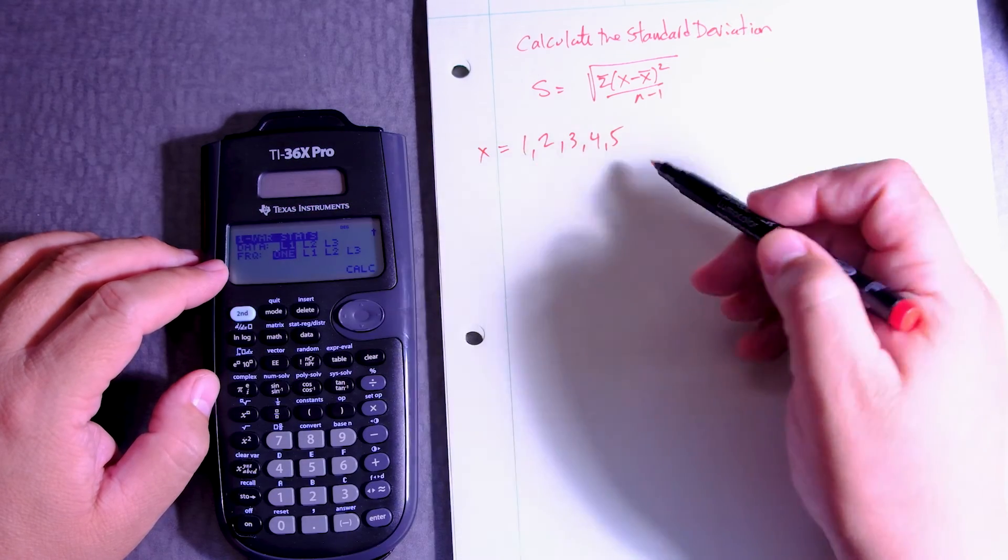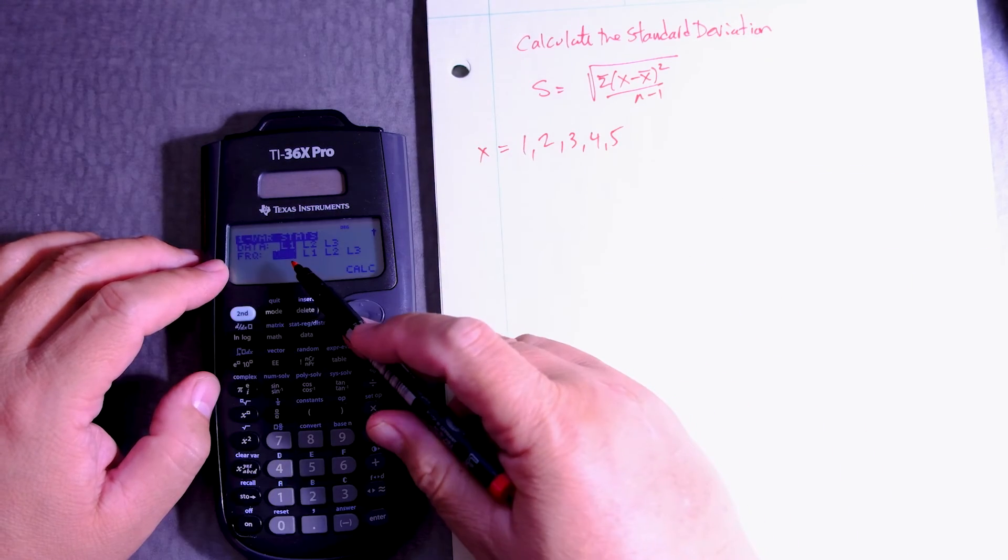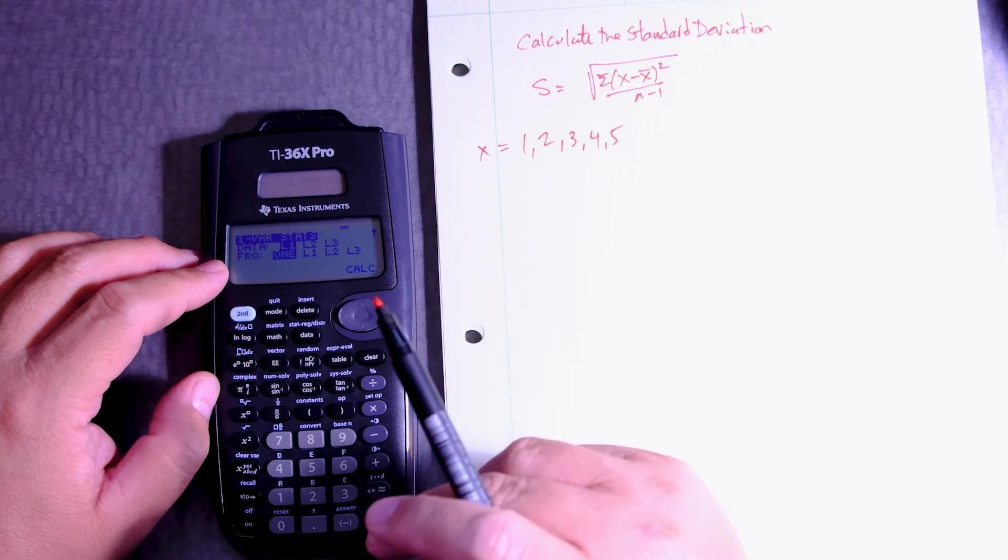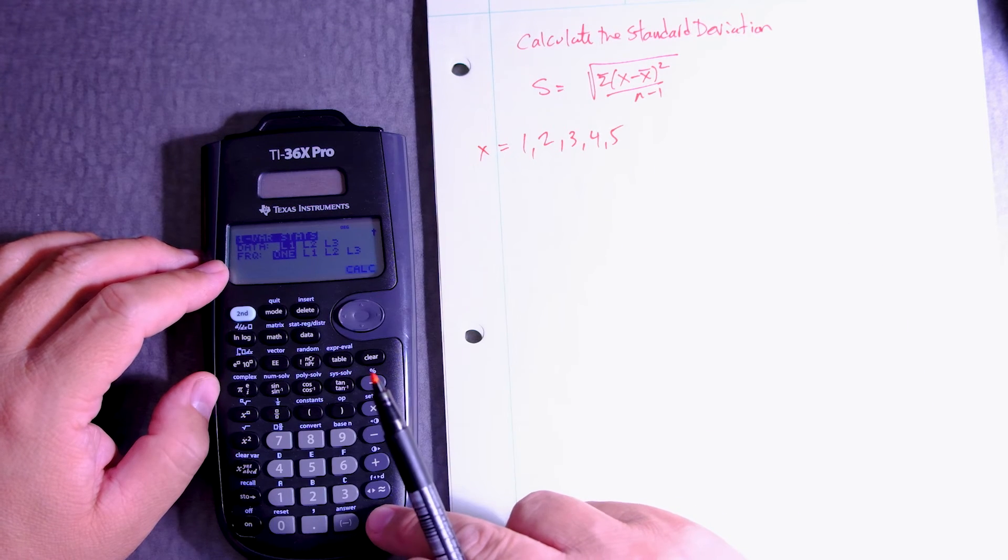There's no other list or a table or anything. So I'm going to put a one. It's automatic. And then Calc.